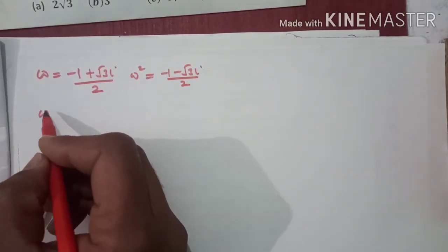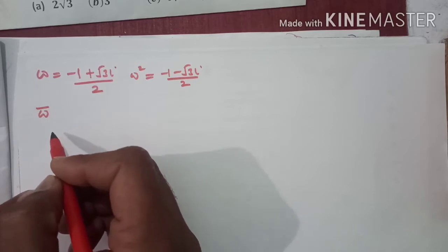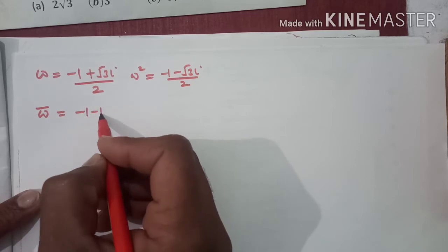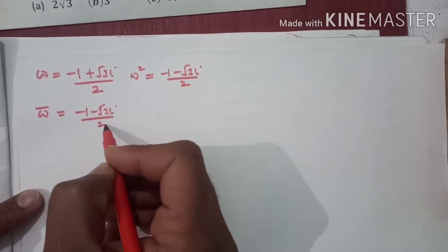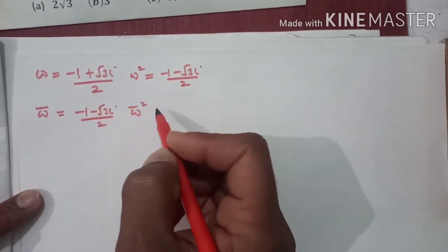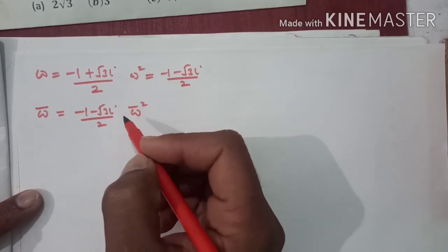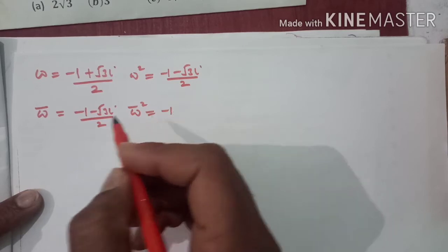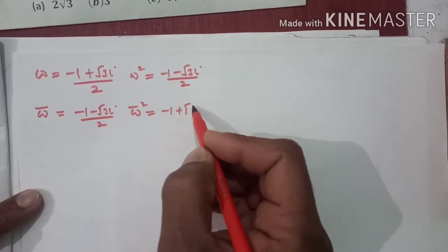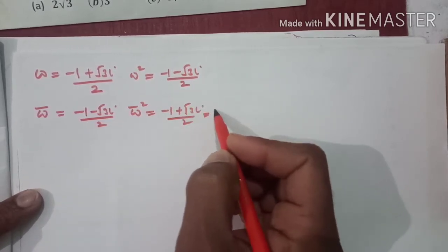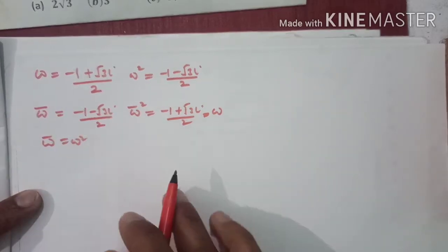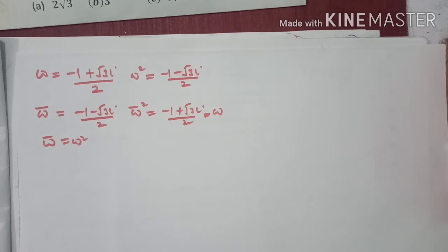اس کے علاوہ پتہ ہونا چاہیے: اگر omega کا conjugate (bar) نکالیں تو وہ (−1 − √3 i)/2 ہے، یعنی omega bar = omega²۔ اسی طریقے سے omega² کا conjugate نکالیں تو وہ (−1 + √3 i)/2 ہے، یعنی omega² bar = omega۔ یہ چیز expression میں use کریں گے۔